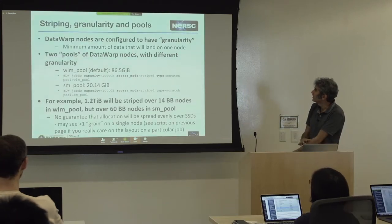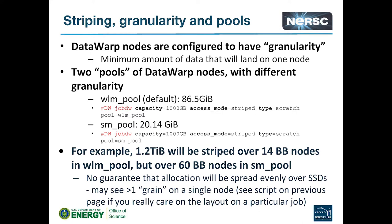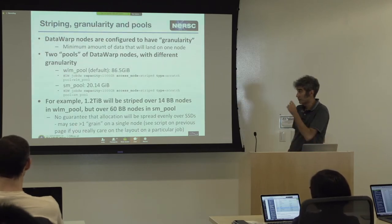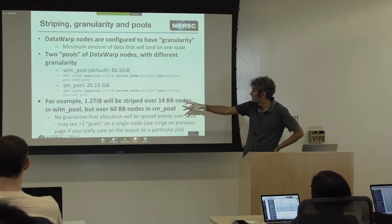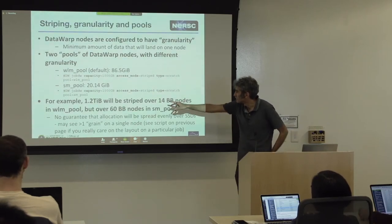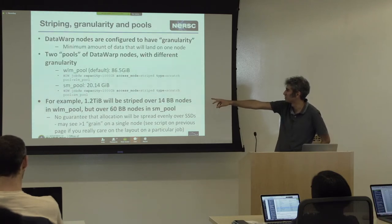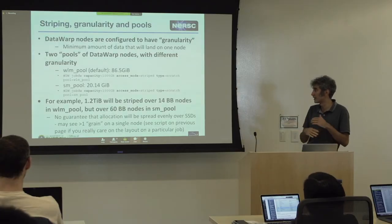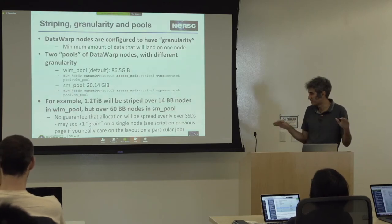On striping: unlike the Lustre file system, you don't have much choice about the striping you get — it's defined by the space you request. We currently have two pools with different granularity. If you request the same space, it's divided into granules across the nodes. For example, if you request 1.2 terabytes, it will be striped over 14 burst buffer nodes in one pool but 60 burst buffer nodes in the other. For smaller spaces with large files, you may benefit from striping over more nodes.